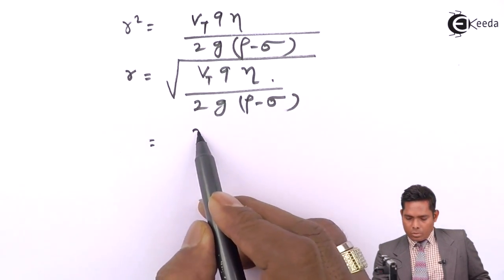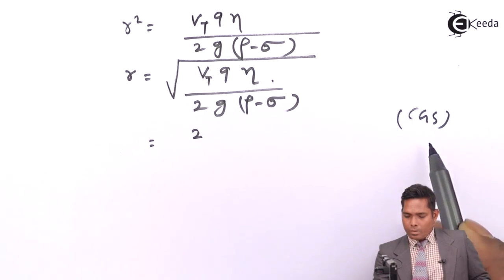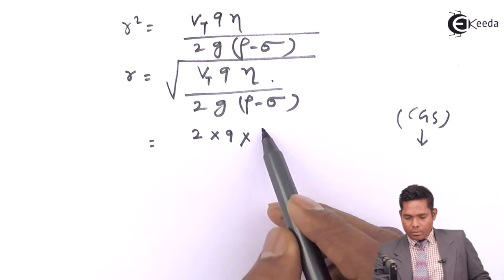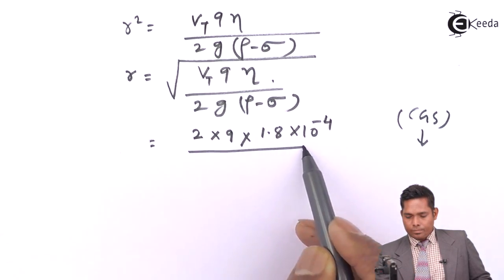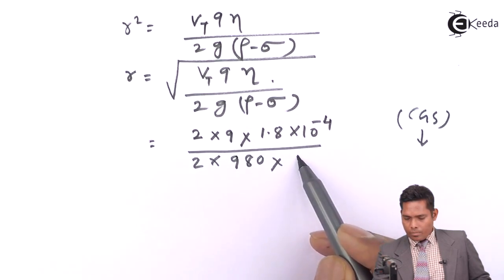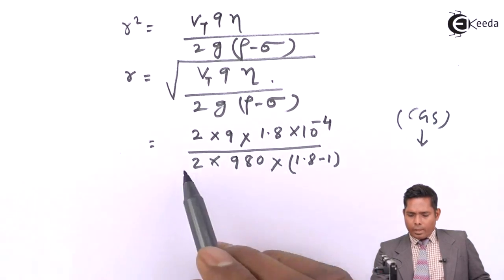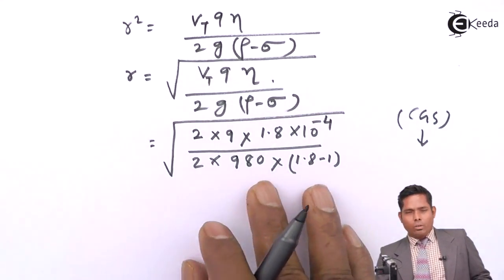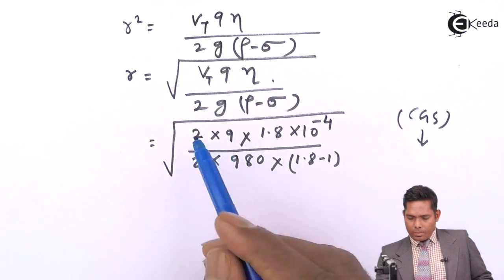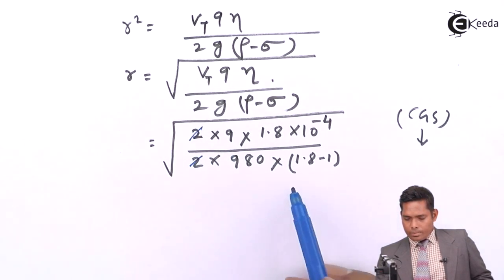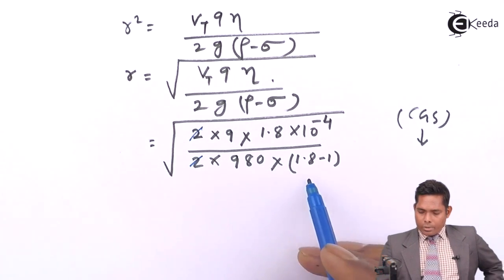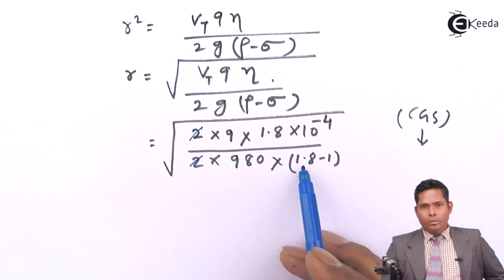Putting the values to get the answer. Let me put the value. Vt is 2 centimeter per second. All units are in CGS system. Therefore, in the CGS system, 2 into 9 into η is 1.8×10⁻⁴ divided by 2g(ρ-σ). This is under root. Now you have to solve this to get the answer. Let me try a few steps. You can cancel these two. This is 0.8. I should have taken that as 2.8 to make the calculation more easier.